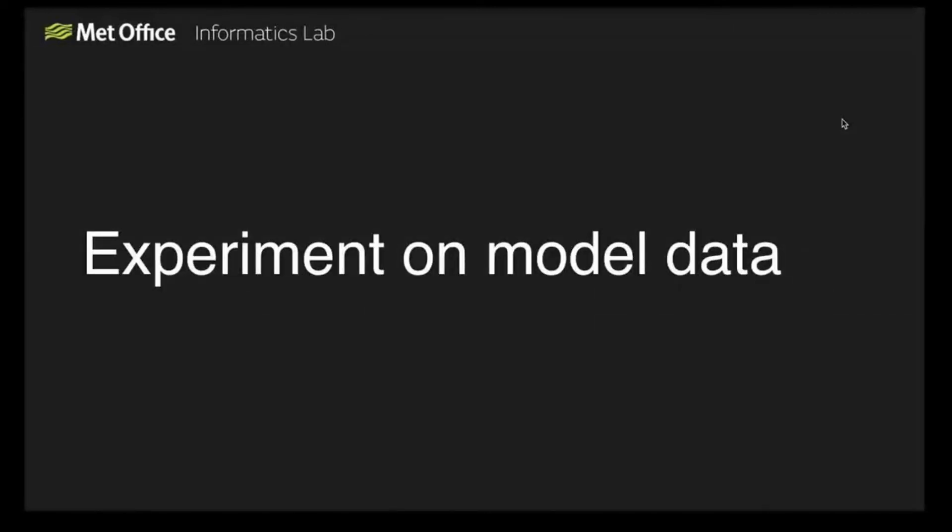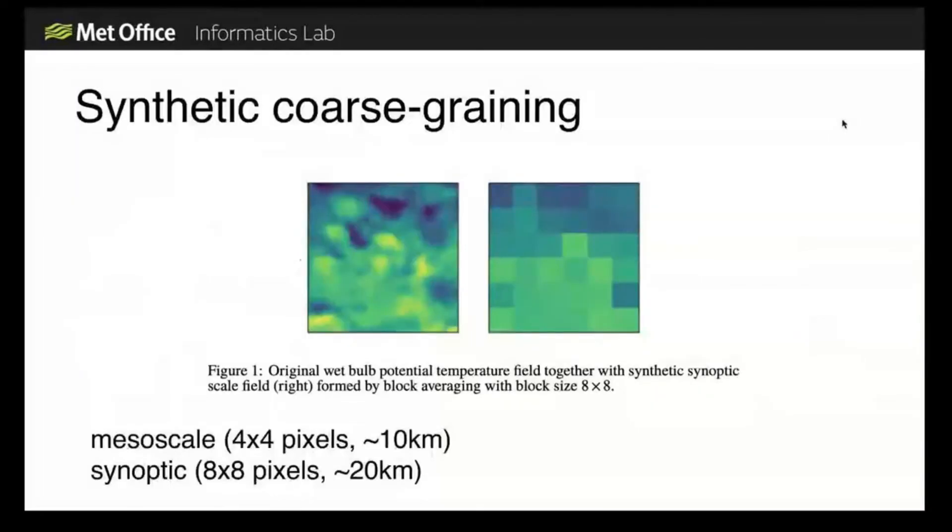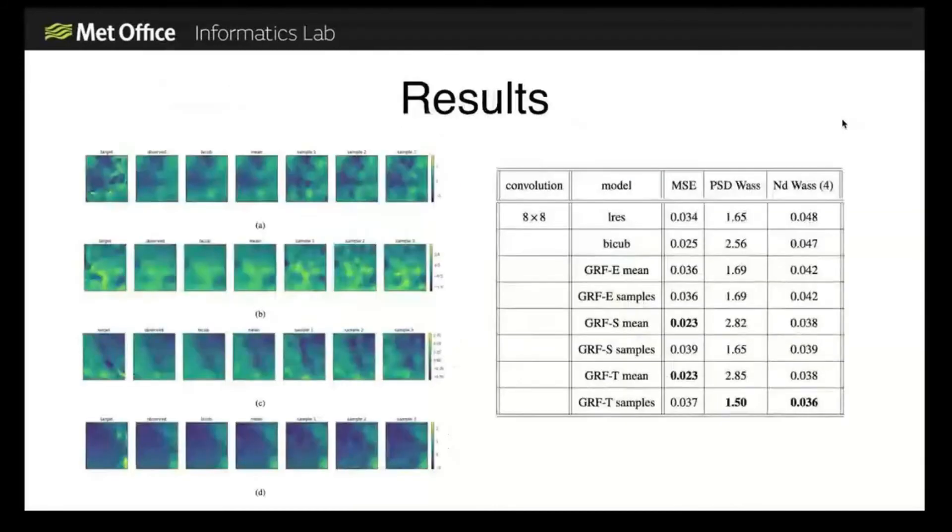I've done an experiment on some model data. This is, as I say, wet bulb potential temperature from the MOGREPS UK model. I've looked at synthetically coarse-grained versions of this and trying to draw samples that capture some of the spatial characteristics of the original from 4x4 coarse-graining and then 8x8 coarse-graining.